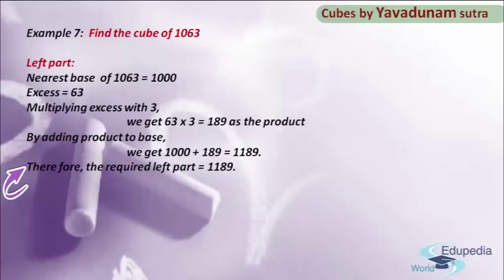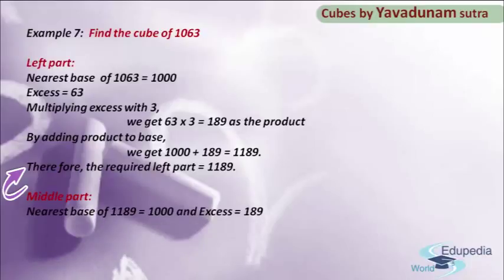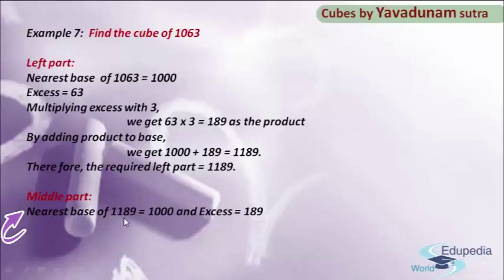After completing the process of the left part, now moving to the process of the middle part. The first step is to take the answer from the left part, that is 1189, and find its nearest base and excess. The nearest base of 1189 is 1000, and the excess is found by comparing 1189 with 1000, giving an excess of 189.